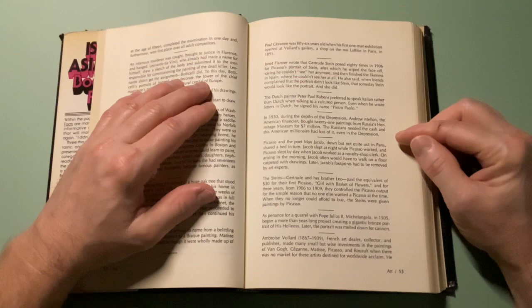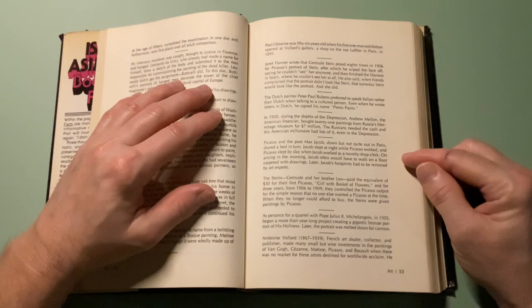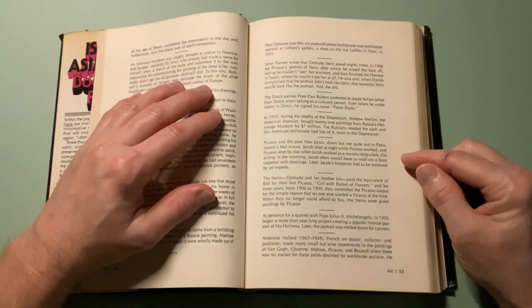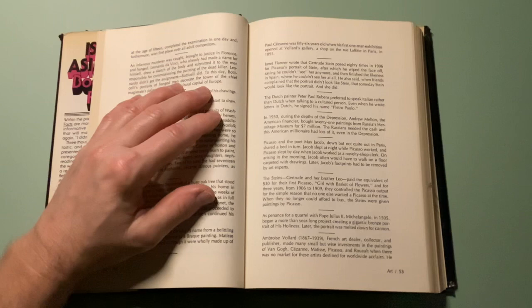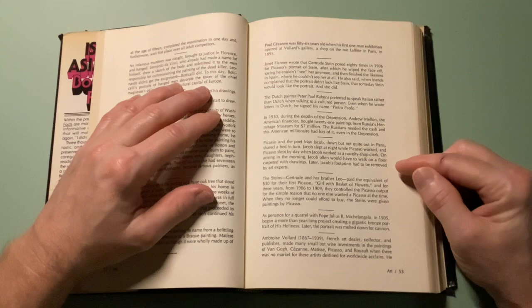Picasso and the poet Max Jacob, down but not quite out in Paris, shared a bed in turn. Jacob slept at night when Picasso worked, and Picasso slept by day when Jacob worked as a novelty shop clerk. On rising in the morning, Jacob often would have to walk on a floor carpeted in drawings. Later, Jacob's footprints had been removed by art experts.